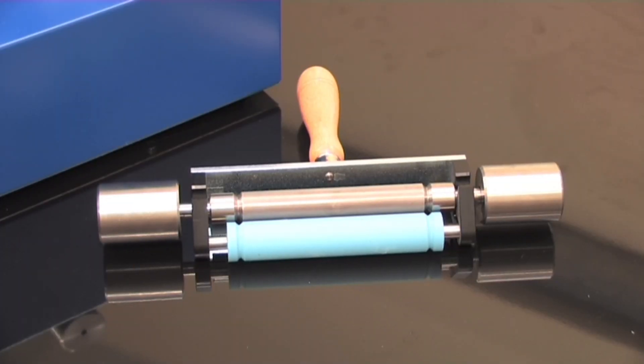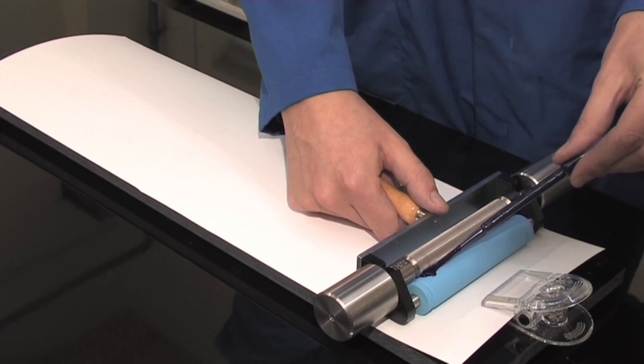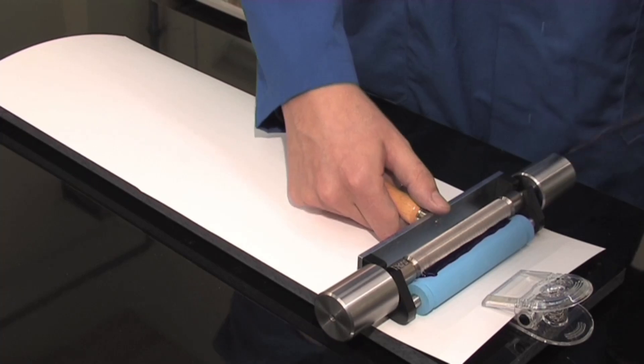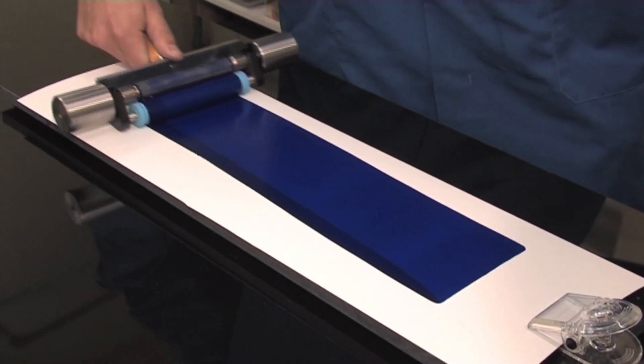The K-Handlocks Proofer is the manual version and is perhaps the simplest method of applying Flexo inks and other fluid coatings onto any substrate to provide accurate and repeatable proofs.